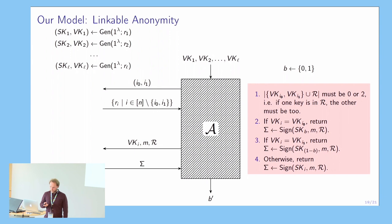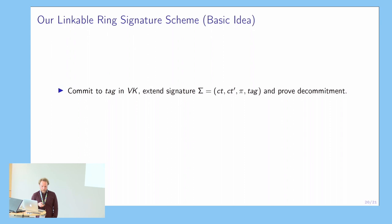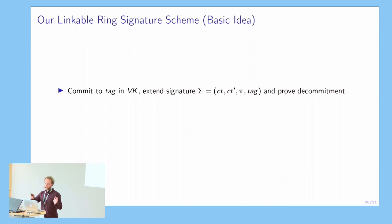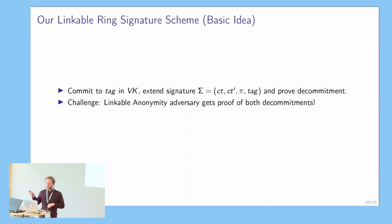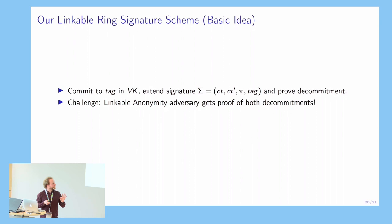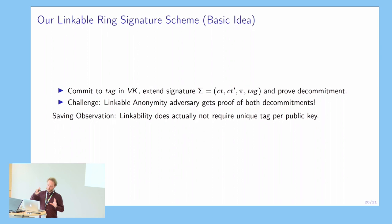We also have a linkable ring signature scheme with the same characteristics as our plain ring signature scheme: logarithmic size, standard model, no setup. The general idea is that we include in our signatures some kind of tag, and in the public keys we have a commitment to this tag. We want to show that in the signature we can prove the correctness of this commitment to the tag. The problem is the adversary gets to see both proofs, so we cannot use the hiding property of the commitment to show anonymity. Our solution is to create a malleable commitment — malleable in a very specific way — that allows us to modify the ring bit by bit to change the positions of the challenge keys in the ring. Full details are in the paper.